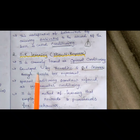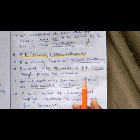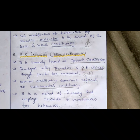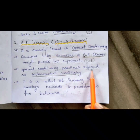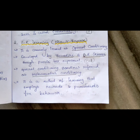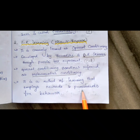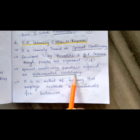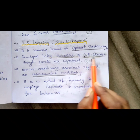SR learning was developed by Thorndike and B.F. Skinner through a puzzle box experiment with a cat. Operant conditioning is sometimes referred to as instrumental conditioning. It is a method of learning that employs reward and punishment for behavior. SR learning is also called operant conditioning and instrumental conditioning.